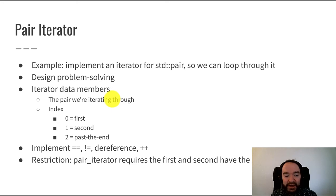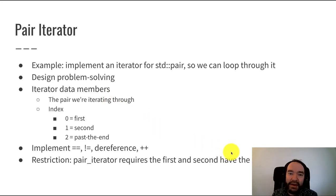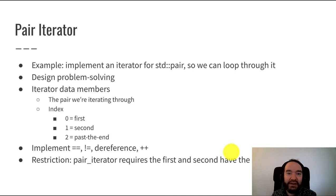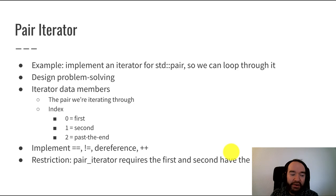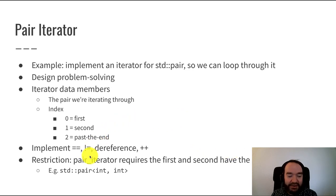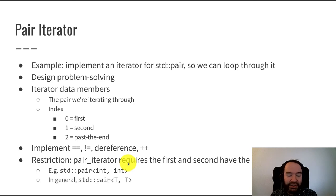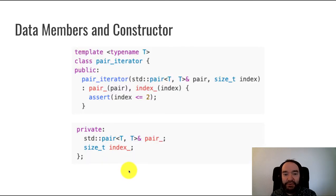I'm going to insist on one restriction: this pair_iterator won't work on any kind of pair. It will only work on a pair where the first and second elements have the same data type. That's kind of implied by the forward iterator abstract data type — every element you iterate through has to be the same data type, because that's how arrays and similar data structures work. So our iterator will work for something like std::pair<int, int>, but not for std::pair<int, string>. In general, it works for std::pair<T, T> where T is the same type in both positions.